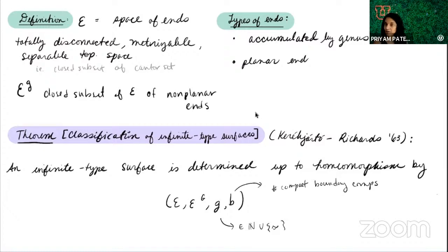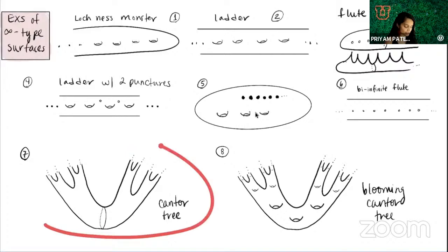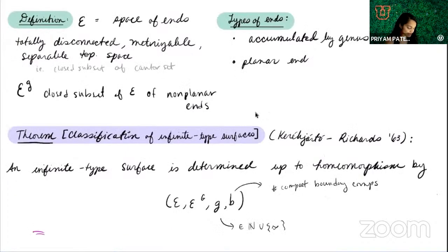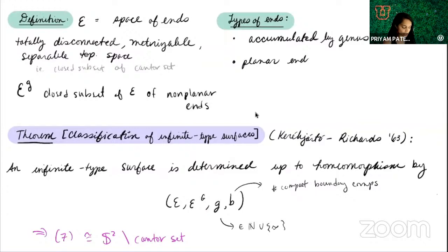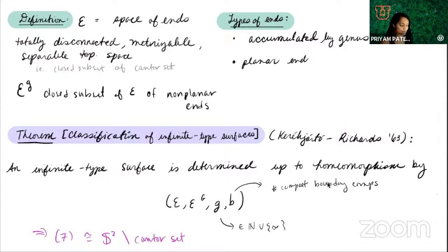This classification tells us, for instance, that the Cantor tree surface is the same as the sphere minus the Cantor set — because the end spaces are both a Cantor set, there are no non-planar ends, genus is zero, and boundary components is zero. But there are limitations: to use this classification, you need to know the homeomorphism type of a closed subset of a Cantor set, and classifying those is very difficult. So you'll usually see a more piecemeal approach with infinite type surfaces.